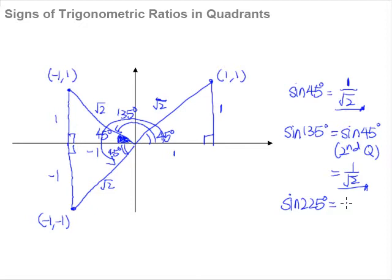Let's now investigate the last quadrant. We want to find sine 315 degrees. Now 315 degrees is actually just 45 degrees short of 360 degrees. So the angle will be in the fourth quadrant, and this angle representing 315 degrees will again be an acute angle of 45 degrees. This point here will now be positive 1 (x) and negative 1 (y), meaning this vertical length will be represented by negative 1 (y), and the hypotenuse will remain square root 2.